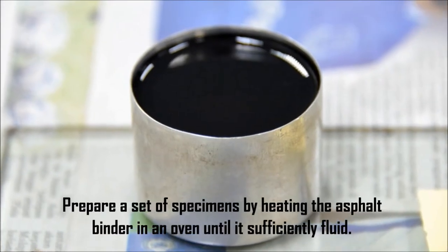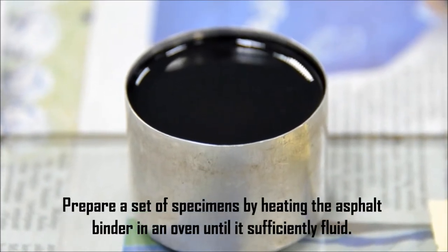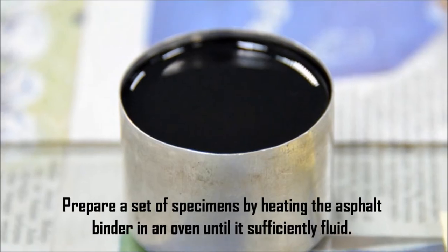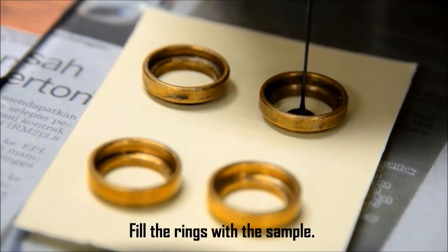Procedure: Prepare a set of specimens by heating the asphalt binder in an oven until it's sufficiently fluid. Fill the rings with the sample.